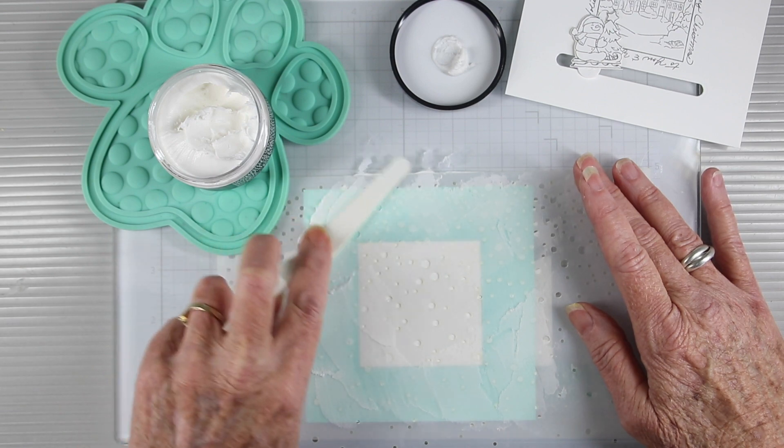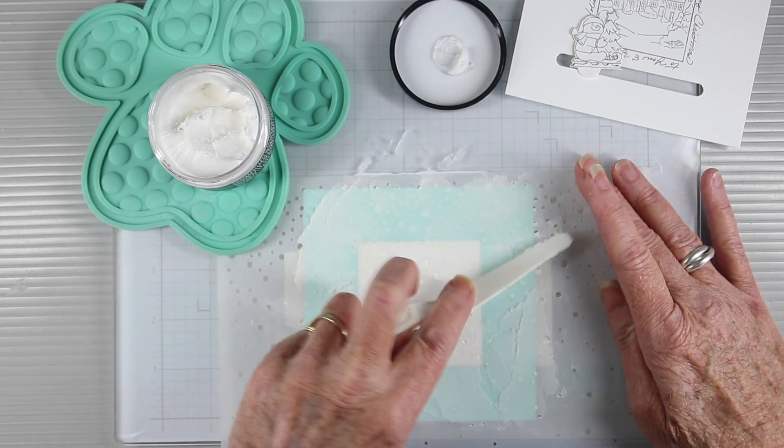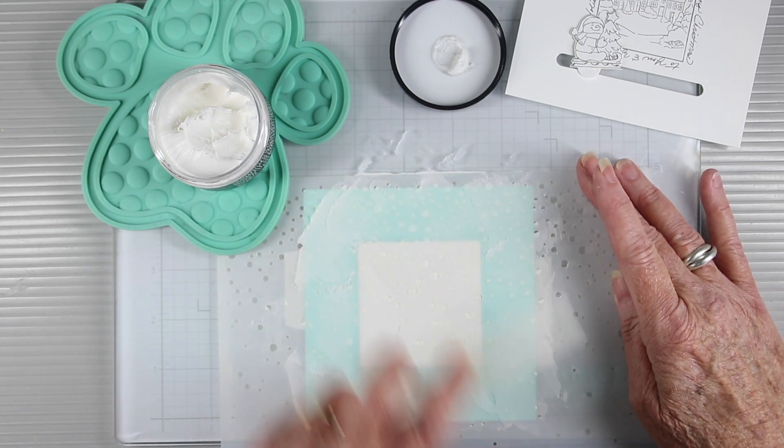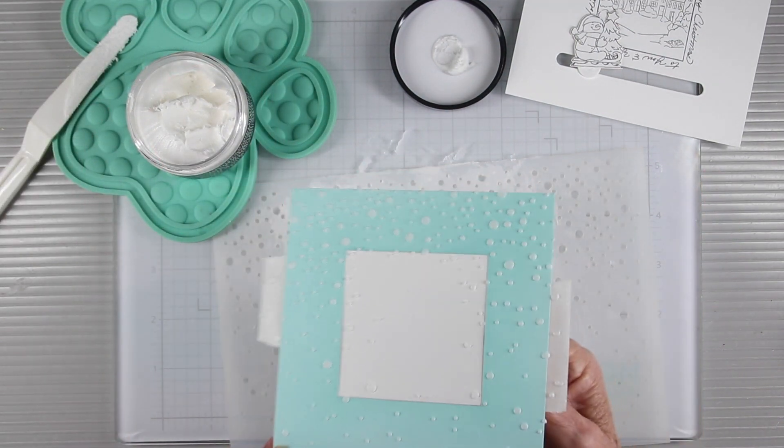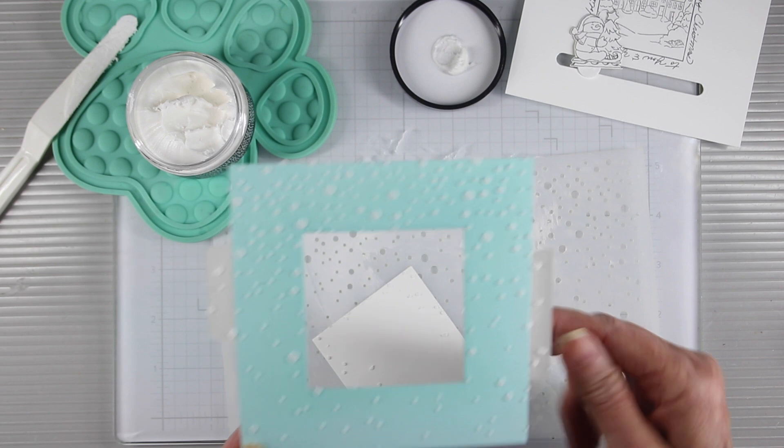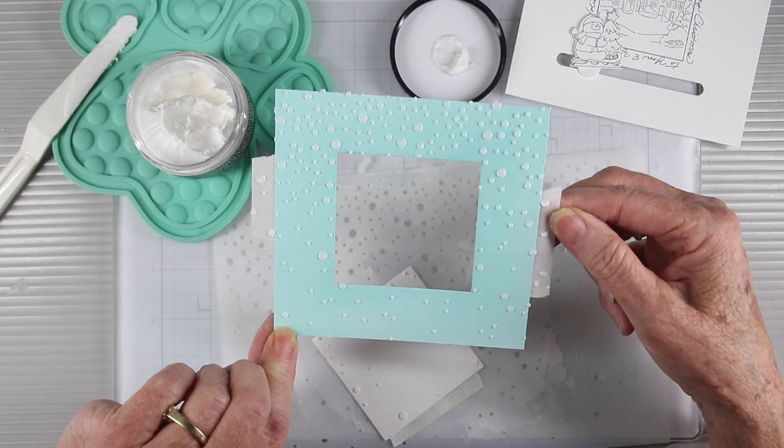Using a palette knife, I'm adding the distressed texture paste in opaque and I'm covering the entire frame. Once I remove the frame from the stencil, I can take out that center piece and have a really clean stenciling.